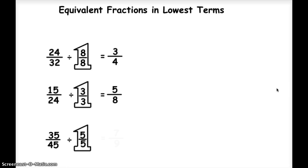And when I do that, 35 divided by 5 is 7, and 45 divided by 5 is 9. So my answer is going to be 7 ninths.